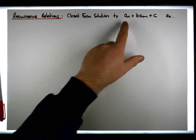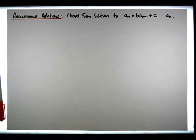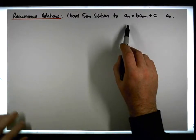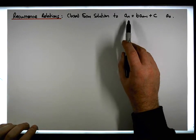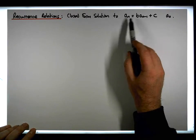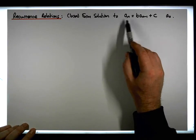This derivation of the closed-form solution is going to require us to have a solution to the summation associated with a power series. The method of differences won't work with this particular type of recurrence — you can probably have a go at it yourself and see why.